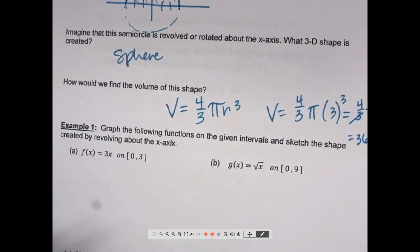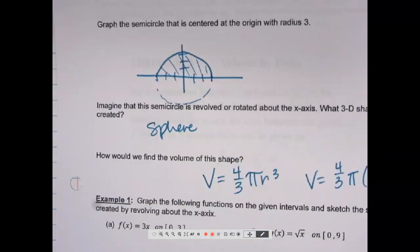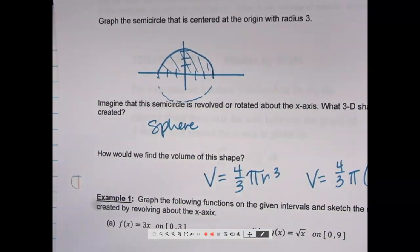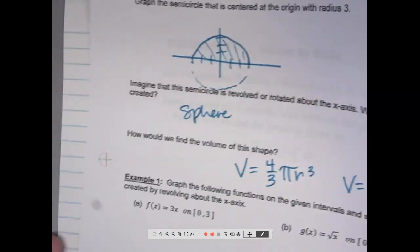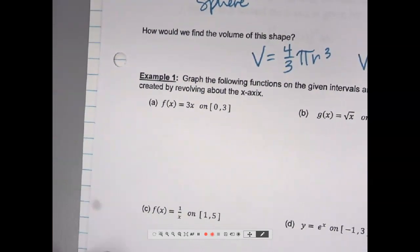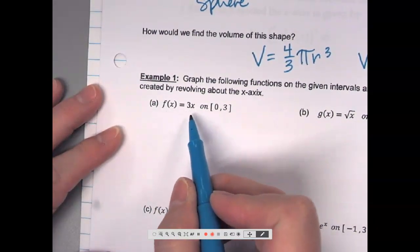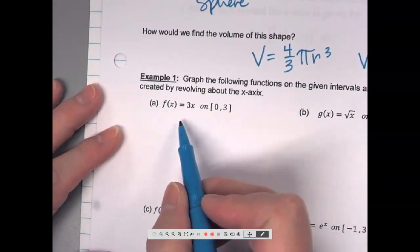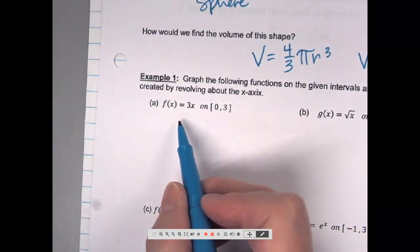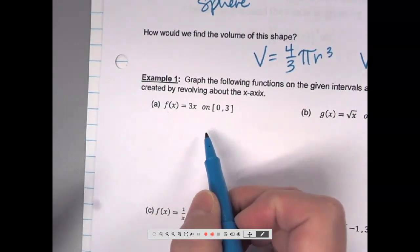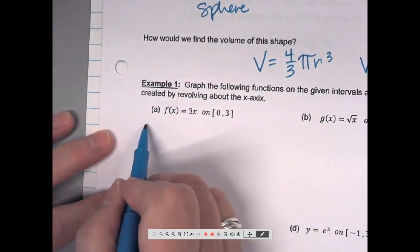So we're going to talk about revolving things to come up with 3D shapes. Now, they're not all going to be a semicircle, but that's the easiest one to picture as to what is created. So this next example, we're going to graph the following functions on the given intervals and sketch the shape created by revolving about the x axis. So if I graph y equals 3x, what will that look like? A line, crossing through the origin with a slope of 3. But I only want to graph it from 0 to 3.